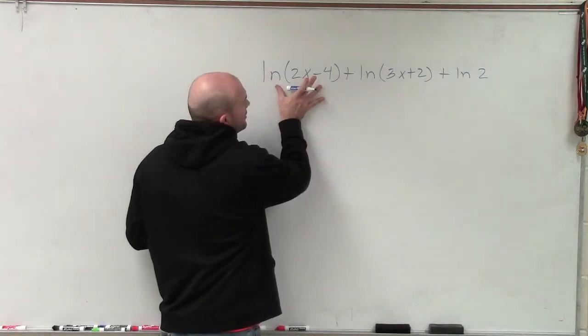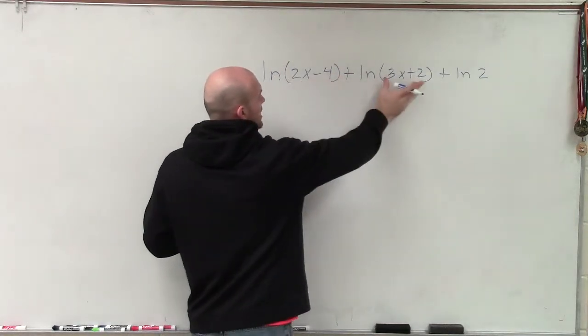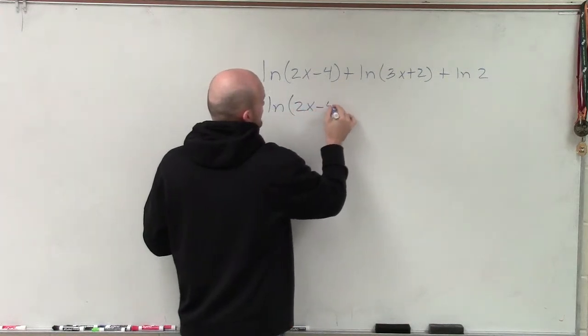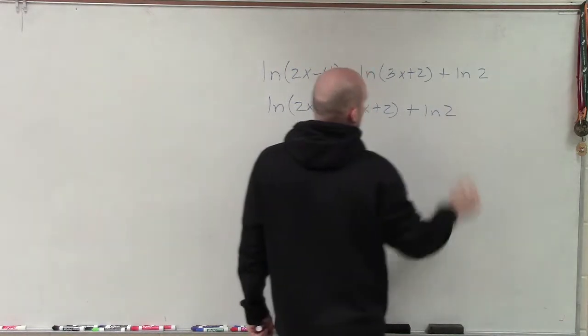So I notice when I have the logarithm plus another logarithm, I can rewrite that as a single logarithm with the product of my two values. So therefore, I can rewrite this as ln of 2x minus 4 times 3x plus 2 plus ln of 2.